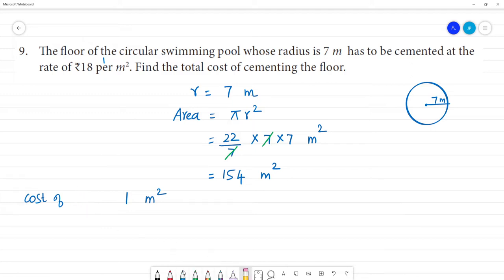One meter square is equal to rupees 18. Cost of cementing 154 meter square is equal to 154 multiplied by 18.